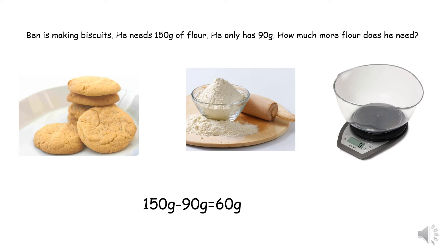Ben needs 150 grams of flour but he only has 90 grams. So I'm going to do 150 grams take away 90 grams, which equals 60 grams. So he needs to get another 60 grams of flour in order to make the biscuits.